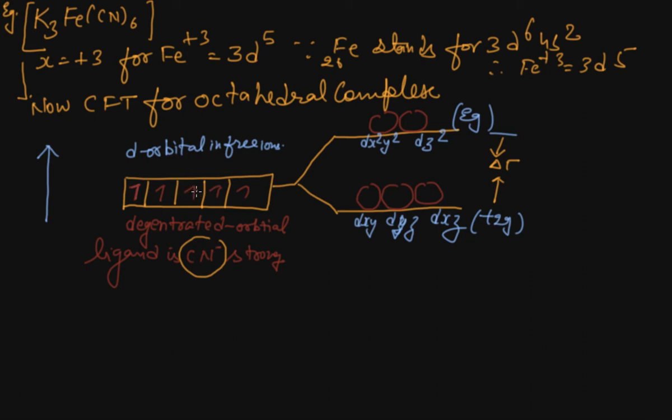Then this d orbital is split into two parts: lower energy level t₂g, which contains the three d orbitals dxy, dyz, dxz, and upper level eg containing dx²-y² and dz². They feel more repulsion and go toward the axis. The dxy, dyz, dxz come to the lower axis.